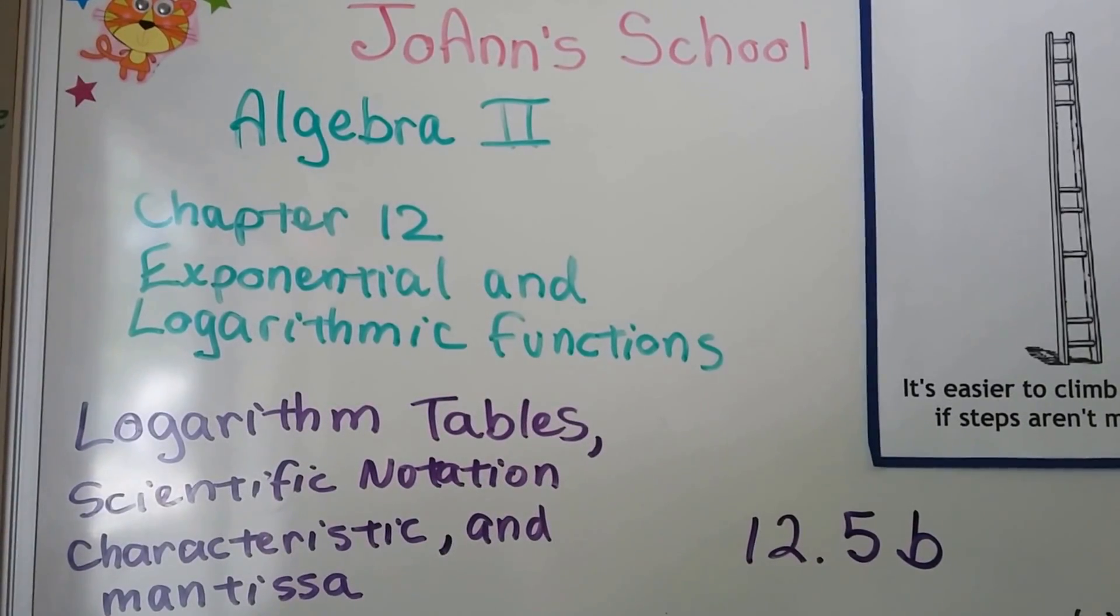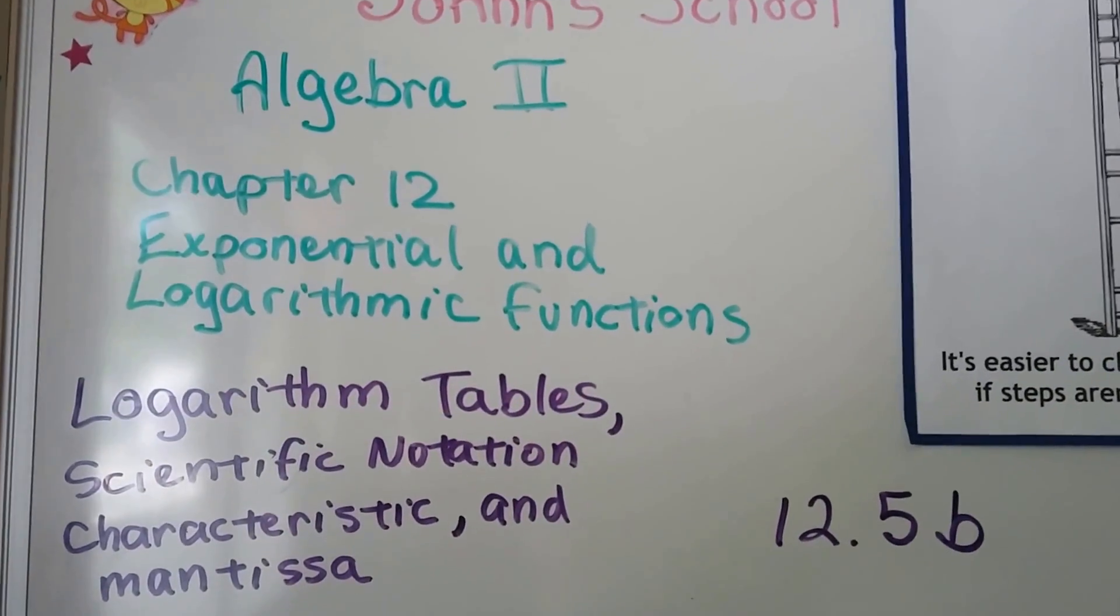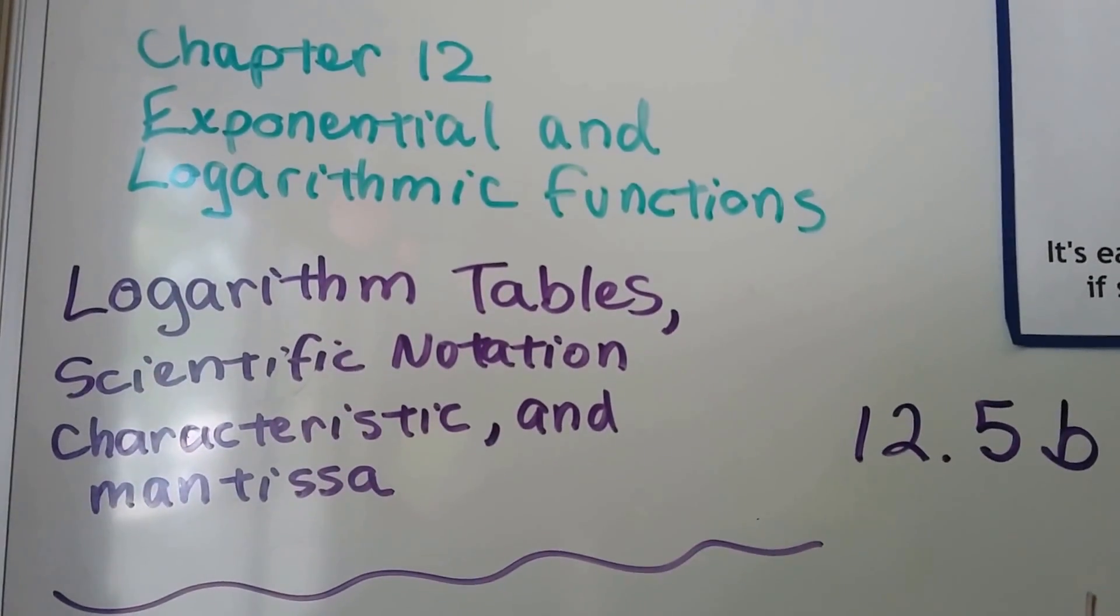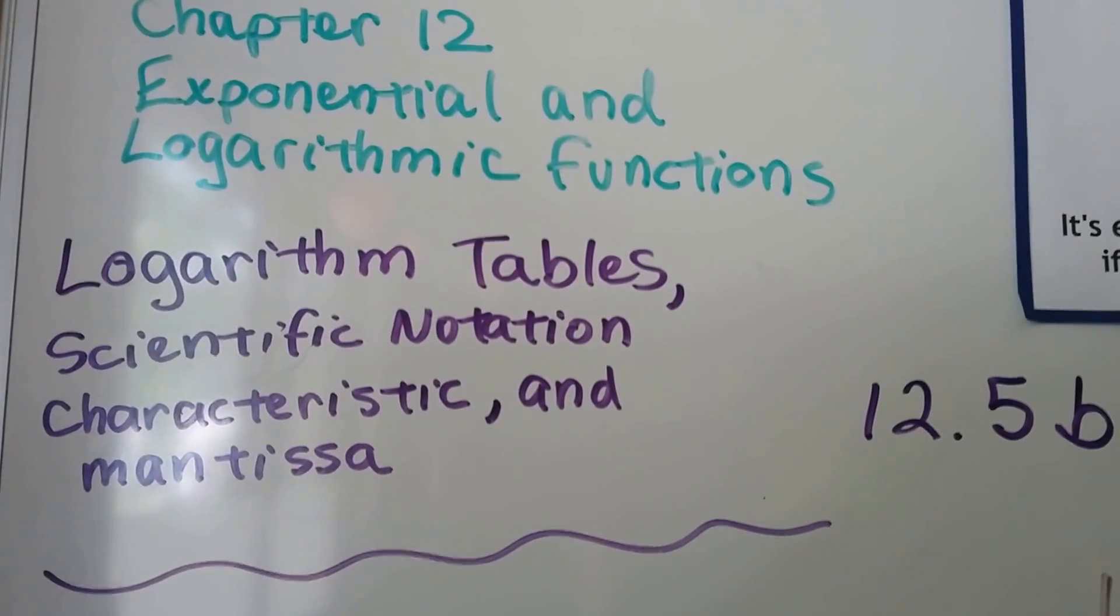We've been talking a lot about exponential and logarithmic functions in this chapter 12. We're at 12.5b. We're going to talk about logarithm tables, scientific notation, characteristic, and the mantissa.